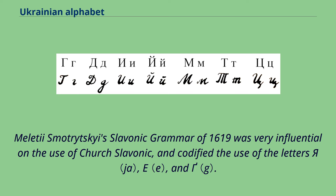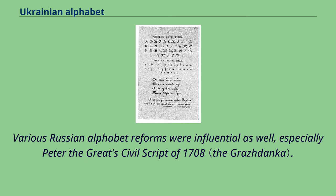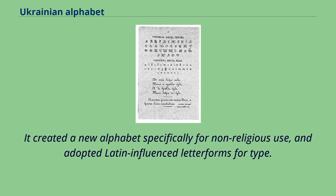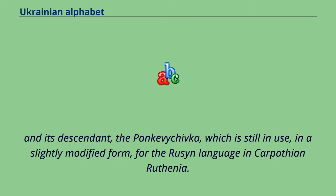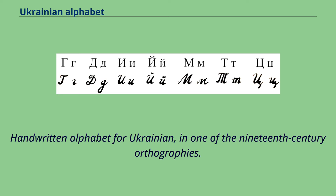Meletiy Smotrytsky's Slavonic grammar of 1619 was very influential on the use of Church Slavonic and codified the use of various letters. Russian alphabet reforms were also influential, especially Peter the Great's civil script of 1708, which created a new alphabet specifically for non-religious use and adopted Latin-influenced letter forms for type. The civil script eliminated some archaic letters but reinforced an etymological basis, influencing Mykhailo Maksymovych's 19th-century Galician Maksymivka script and its descendant the Pankevyshivka, still in use for the Rusyn language in Carpathian Ruthenia.